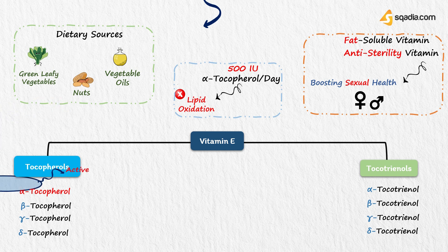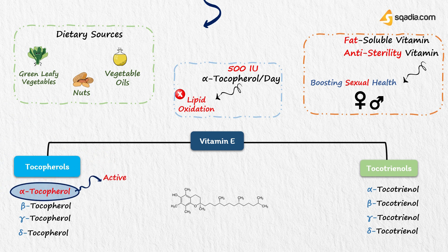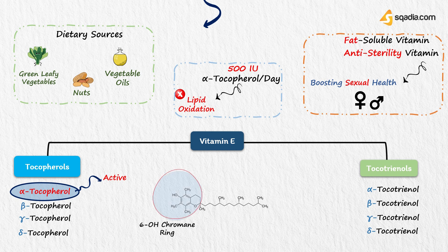Among these, the alpha form of tocopherol is the most active one. This alpha form consists of a 6-hydroxy-chromane ring with an isoprenoid side chain. The antioxidant property of vitamin E is due to the OH on this chromane ring.